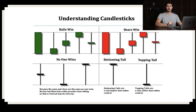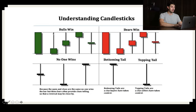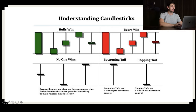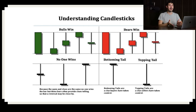Before we go into it, I want you to pause the video and try to figure it out yourself. We know that for this green bar, the open was right here and the close was right here, and we have this huge tail. Try to ask yourself — who won the battle, the buyers or the sellers? And same thing with the bottoming tail: it opened here and closed here, but we have a really large wick. Think about the implication that wick gives.